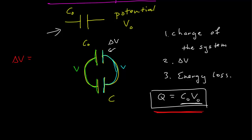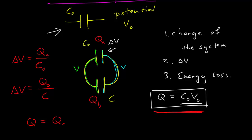Using the charge-voltage relationship, the new change in voltage equals the charge across the upper capacitor, QA, divided by its capacitance C-naught. That voltage difference has to be the same for both capacitors. The lower one also has some charge QB divided by its capacitance, and they have to be equal. Since charge is conserved, the total charge equals the sum of the charges across both capacitors.